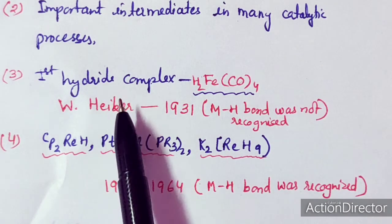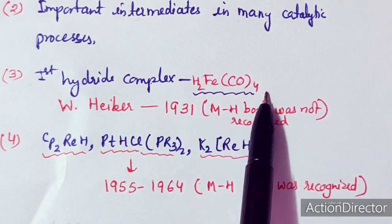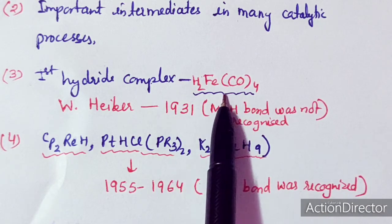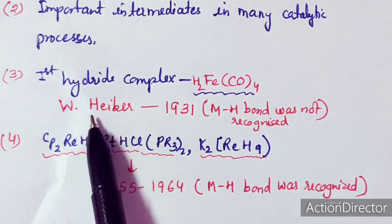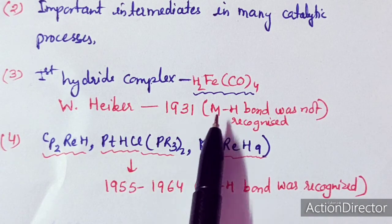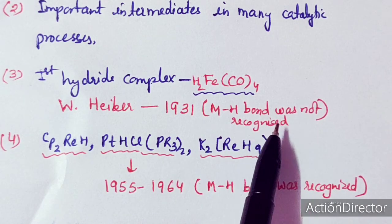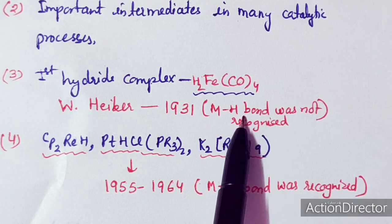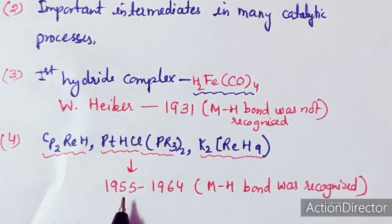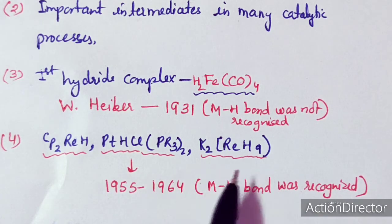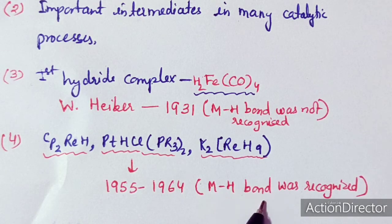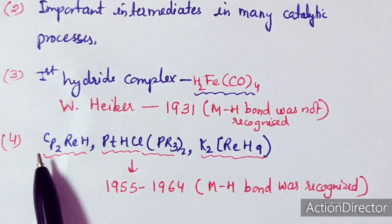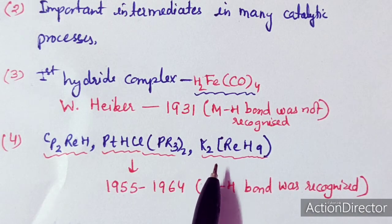The first hydride complex was H₂Fe(CO)₄ — a carbonyl hydride complex. It was synthesized in 1931 by Heber. At that time, the M–H bond was not recognized. It took about 25 to 30 years before researchers recognized the M–H bond in metal hydride complexes.